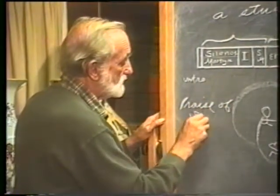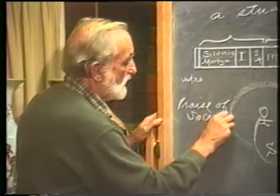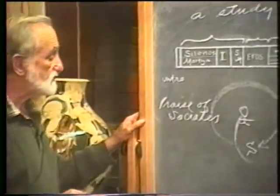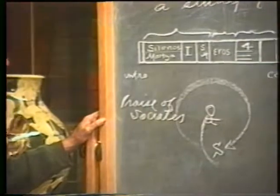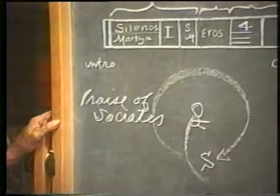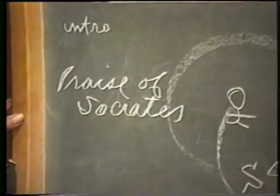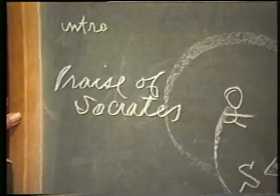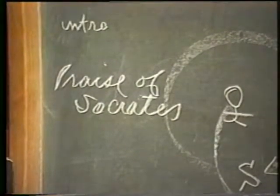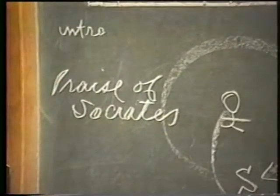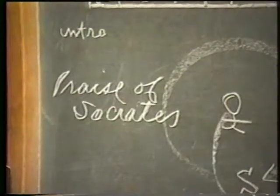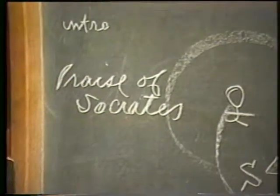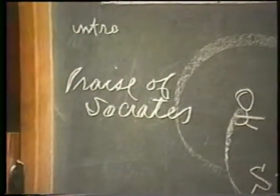Alcibiades says he will tell the truth about Socrates. Socrates responds, 'All right, do it.' Alcibiades then announces he will praise Socrates and do it with similes.